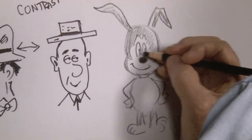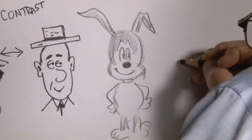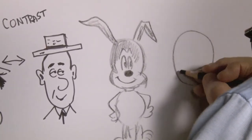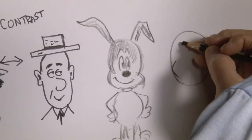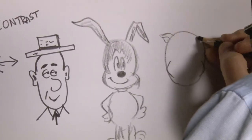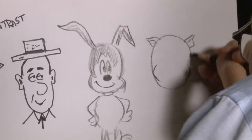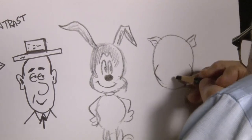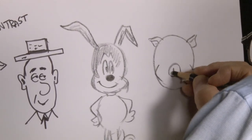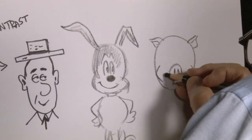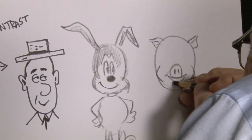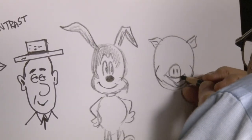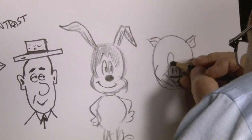But now, in addition to the rabbit, we can have this character here. Notice the almost perfectly round circle. And I'm sure you can tell what I'm drawing here.